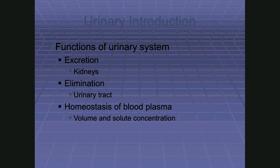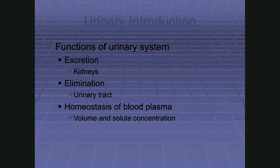The main components of the urinary system: the kidneys are the primary functioning structure that filter waste from the bloodstream. Then we have the urinary tract — the ureters, bladder, and urethra. The ureters connect the kidneys to the bladder, and the urethra connects the bladder to the outside. The next big function is elimination — removal of waste actually out of the body itself, which the urinary tract is responsible for.